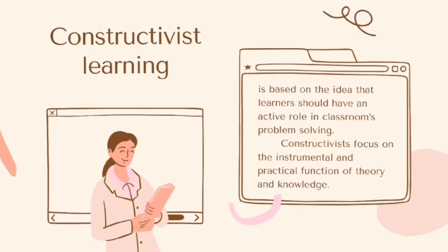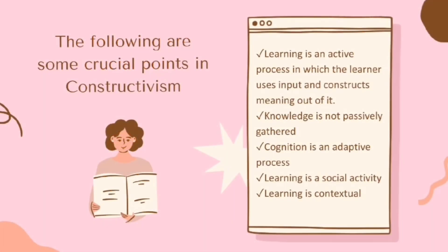Constructivist learning is based on the idea that learners should have an active role in classroom problem-solving. Constructivists focus on the instrumental and practical function of theory and knowledge, training students as critical thinkers to find the relevancy between what they have learned and what they know. Constructions are located in the minds of individuals. Key points in constructivism: learning is an active process; knowledge is not passively gathered; cognition is an adaptive process; learning is a social activity; and learning is contextual.